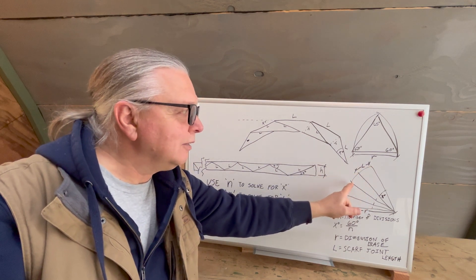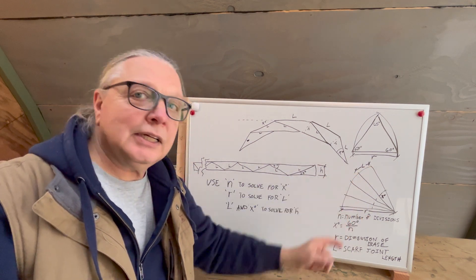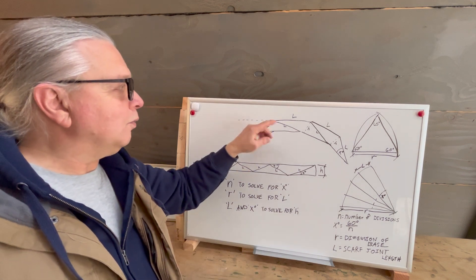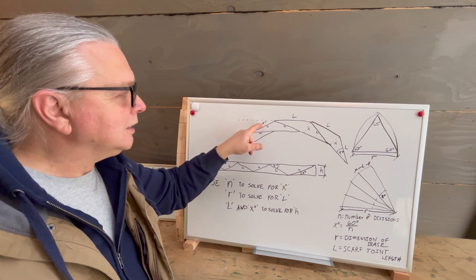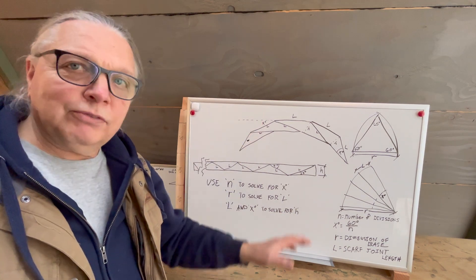So when this rotates down that far, it's rotating down x degrees. So when this line here goes from here to here, it's x degrees. It makes it very simple.